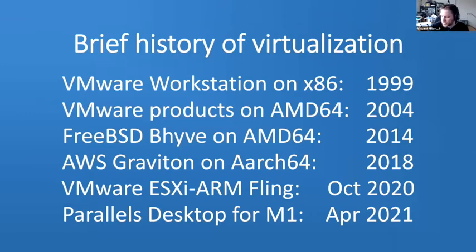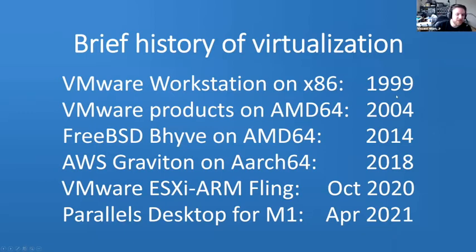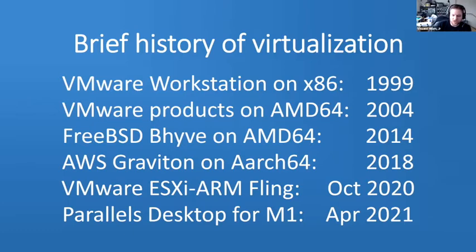It's been kind of stagnant for a while, but in the past few years it's really blown up. Virtualization pretty much came onto the market with VMware Workstation for 386 systems back in 1999. In 2004, VMware introduced their 64-bit line of products. Around 2014, FreeBSD introduced the bhyve hypervisor for AMD64. Then dealing with ARM architecture, the first real big hypervisor to hit the market was AWS with Graviton around 2018.